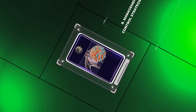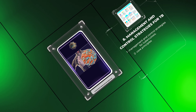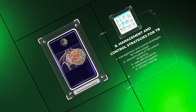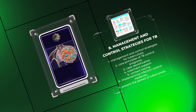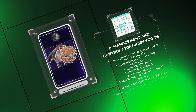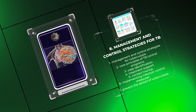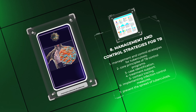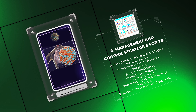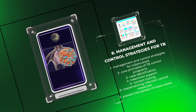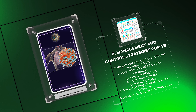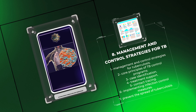In this segment on the management and control strategies for tuberculosis, we discuss the core principles of TB control programs. These include case identification, treatment support, contact tracing, and implementing infection control measures to prevent the spread of tuberculosis.